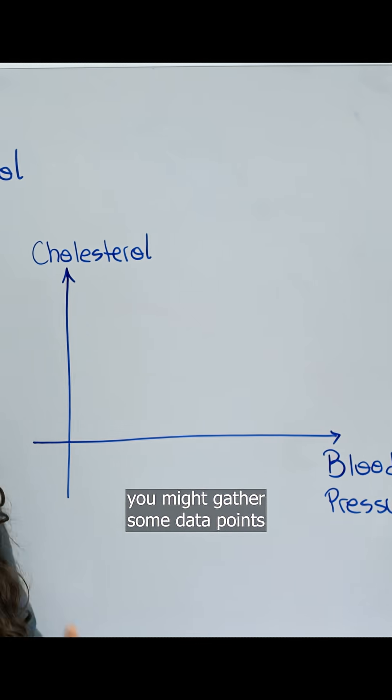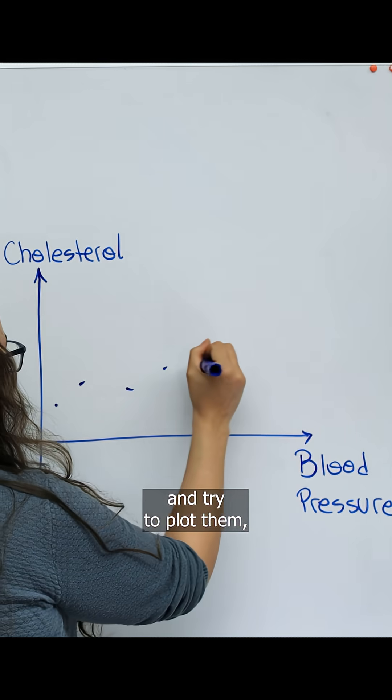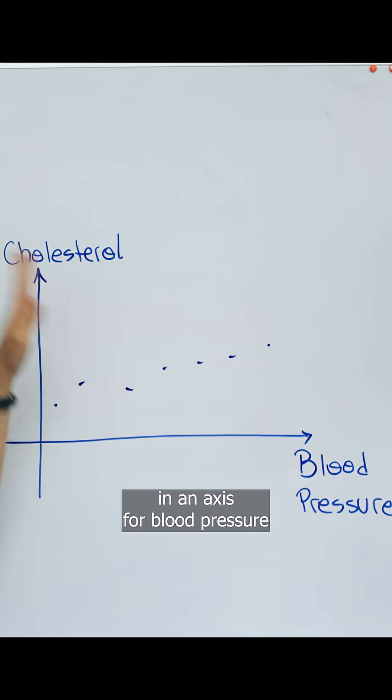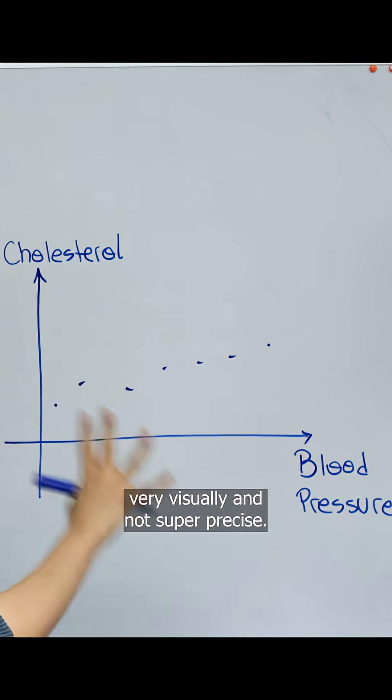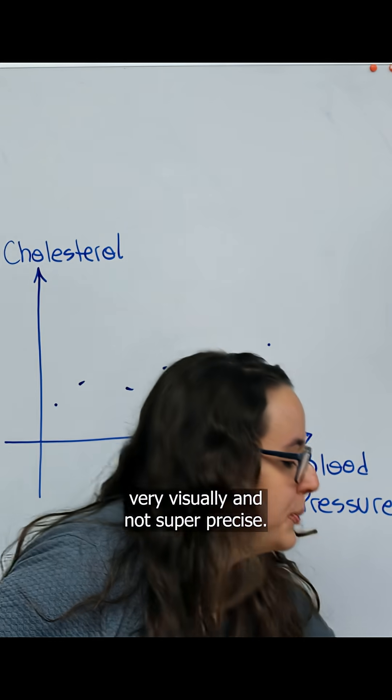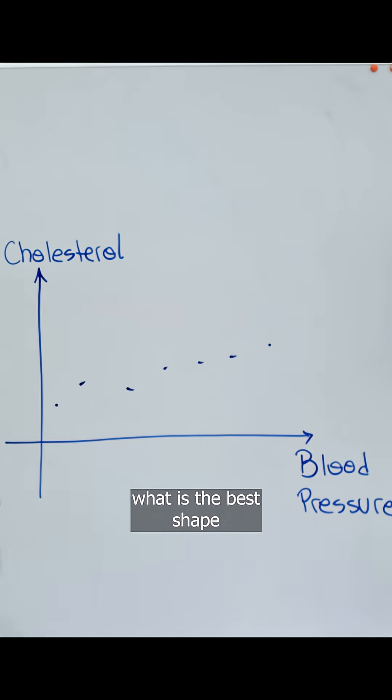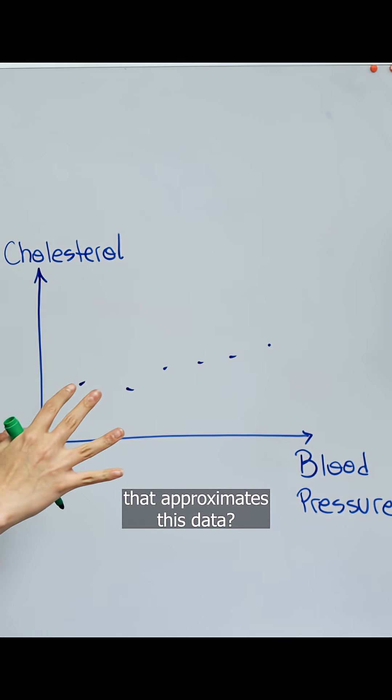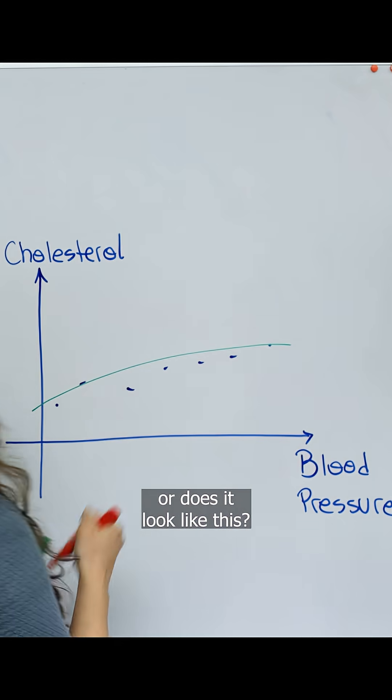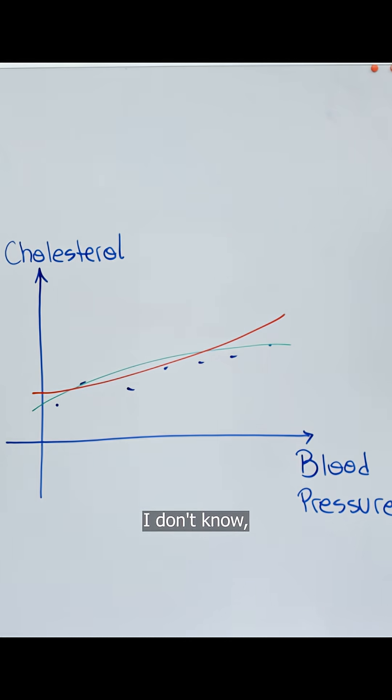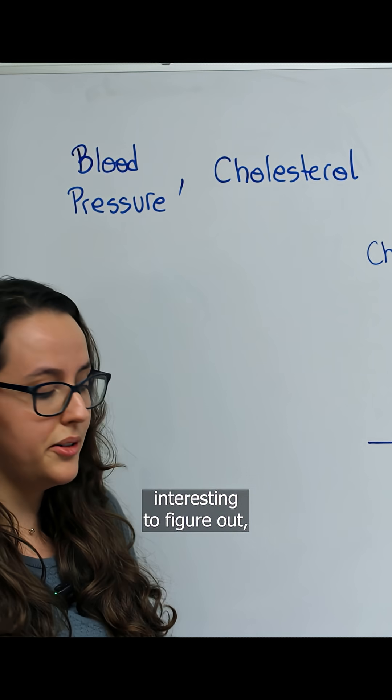Well, you might gather some data points and try to plot them in an axis for blood pressure and cholesterol. I don't do health, so take this very visually and not super precise. And you might ask, what is the best shape that approximates this data? Does it look like this? Or does it look like this? I don't know. That would be interesting to figure out.